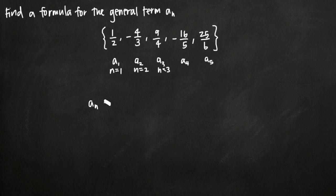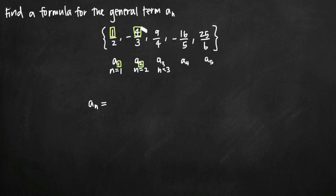Let's look at the numerator first. Writing down a sub one, two, three, four underneath the sequence is really helpful. We want to look at the numerator in relation to the value of n. In the first term, the numerator is one and n is one — they're equal. In the second term, we have four in the numerator and n equals two; four is two squared. In the third term, we have nine and n equals three; nine is three squared. In the fourth term, sixteen and n equals four; sixteen is four squared. So the numerator is n squared. In the a sub n-th term, we're going to call the numerator n squared.